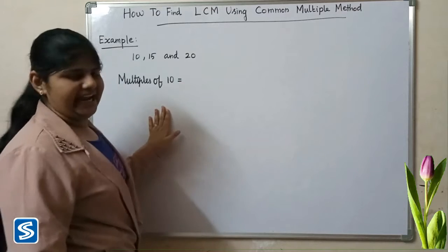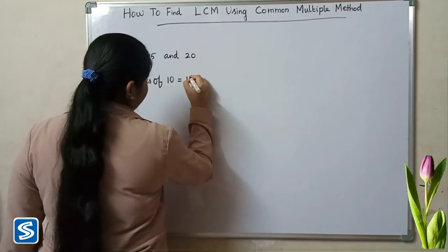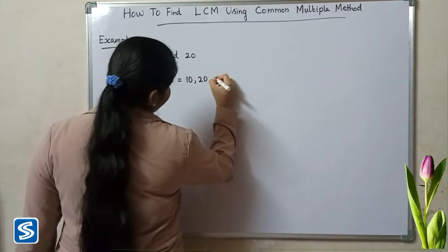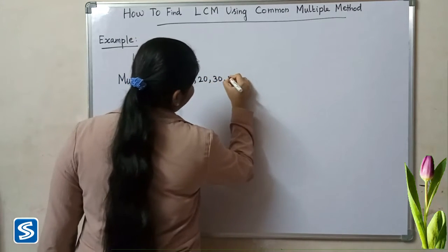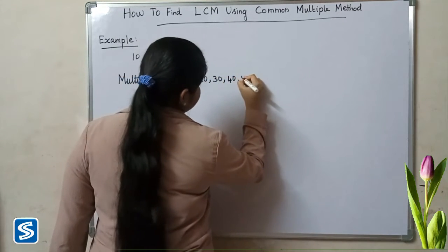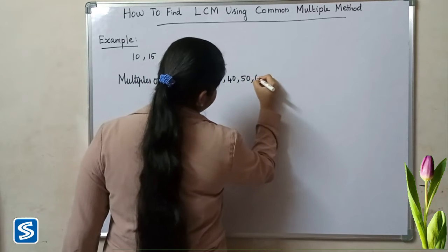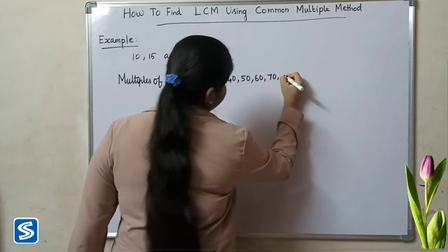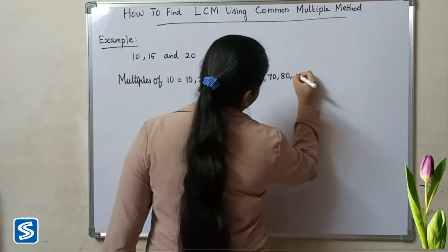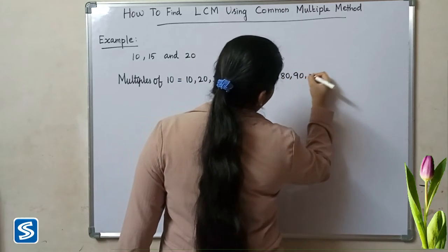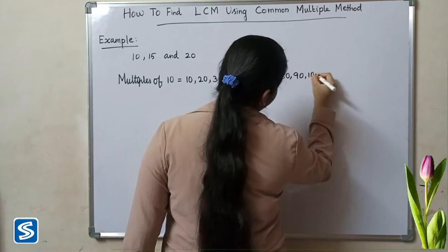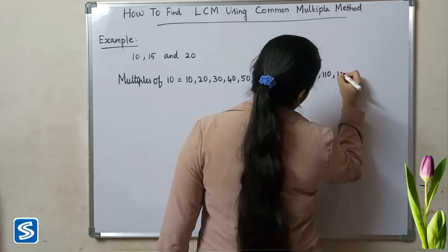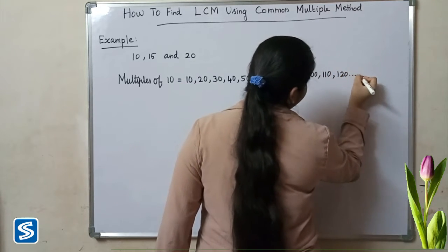Multiples of 10 are: 10 ones are 10, 10 twos are 20, 10 threes are 30, 10 fours are 40, 10 fives are 50, 60, 70, 80, 90, 100, 110, 120, and so on.